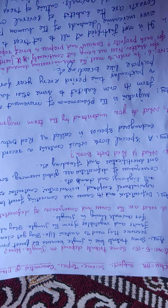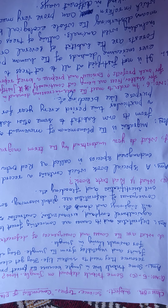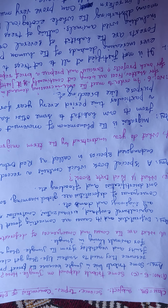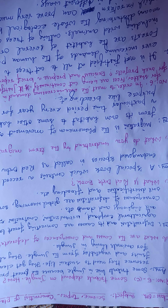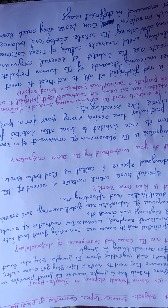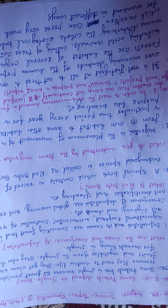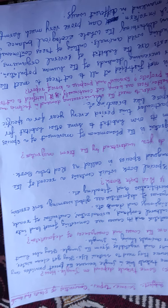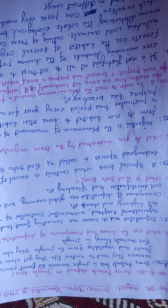Now it is part D of question number five: what are the causes and consequences of deforestation? We have to understand what deforestation is and what its consequences are. The causes of deforestation are: converting forest land into agricultural cropland, urbanization, and construction of roads, highways, and dams.